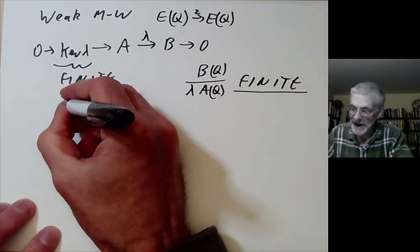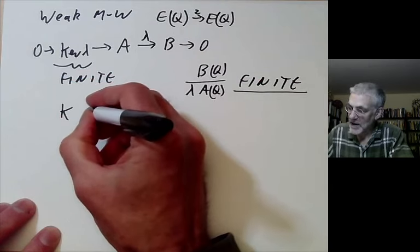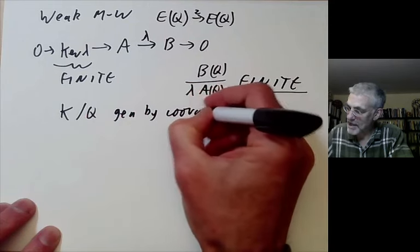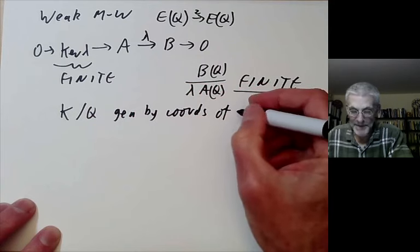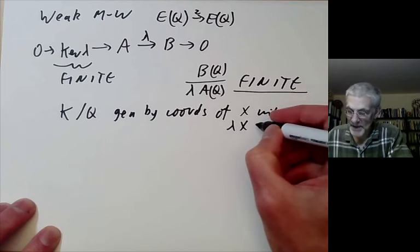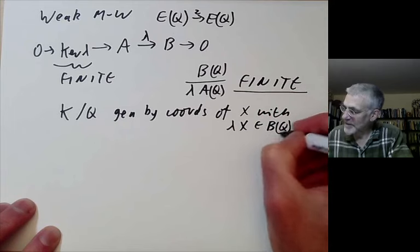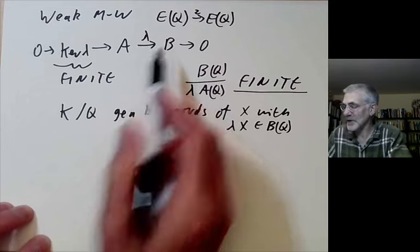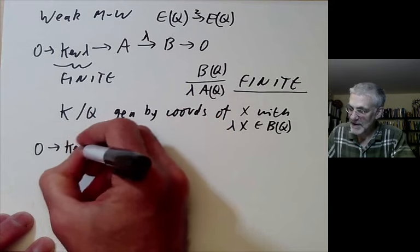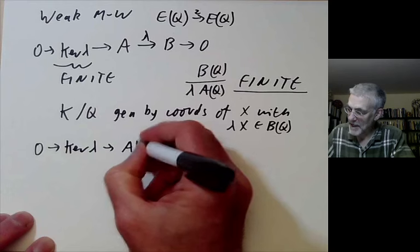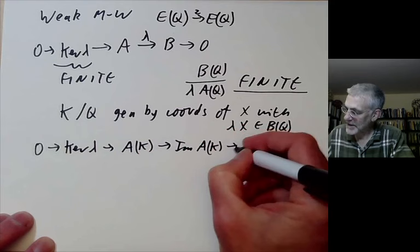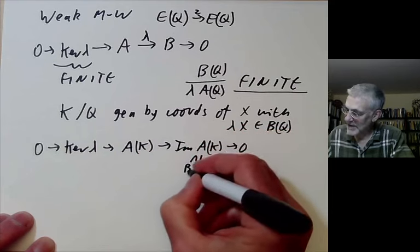For this, what we do is we take K to be the field over Q generated by the coordinates of the points x with lambda x being a rational point of B. We find we get an exact sequence. 0 goes to the kernel of lambda, goes to A(K), goes to the image of A(K), goes to 0, where this is contained in B(K).